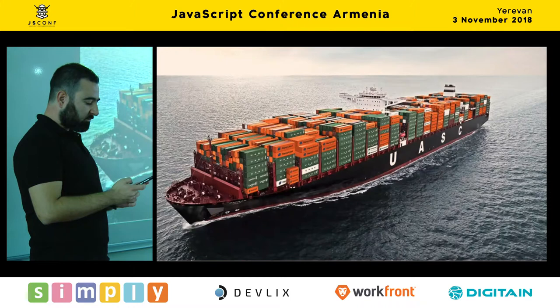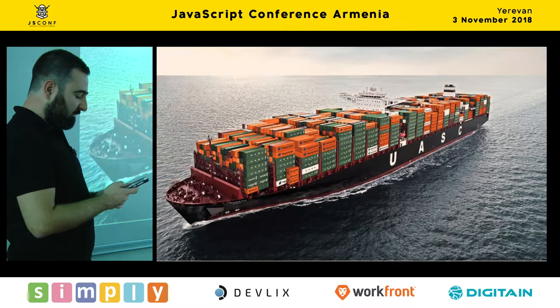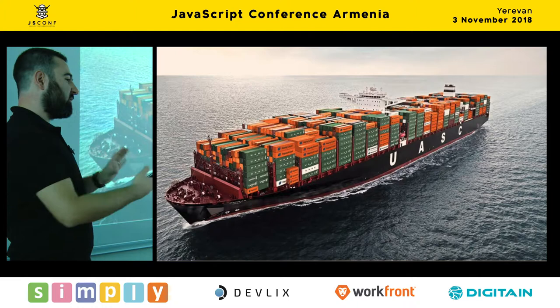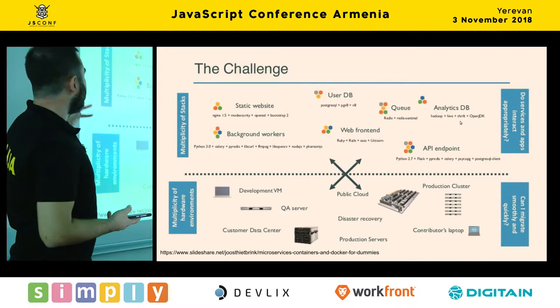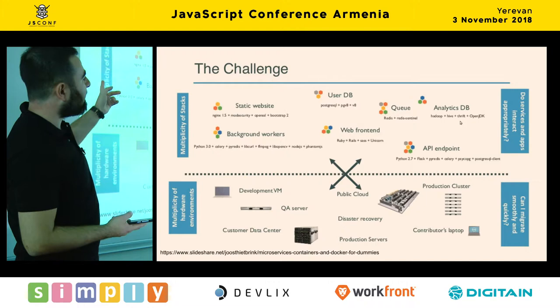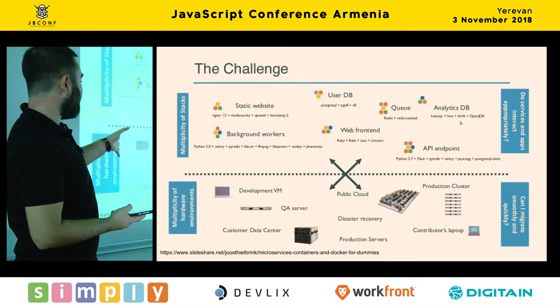Let's go over what Docker containers actually are. This is the problem that Docker containers are trying to solve. You have different types of services: a static website, workers, front end, DB, analytics. And you have different types of hardware providers — your development machine, your actual testing server, the data center, the cloud. You get this problem he called 'the matrix from hell' — all your different types of services and all different types of hosting environments.